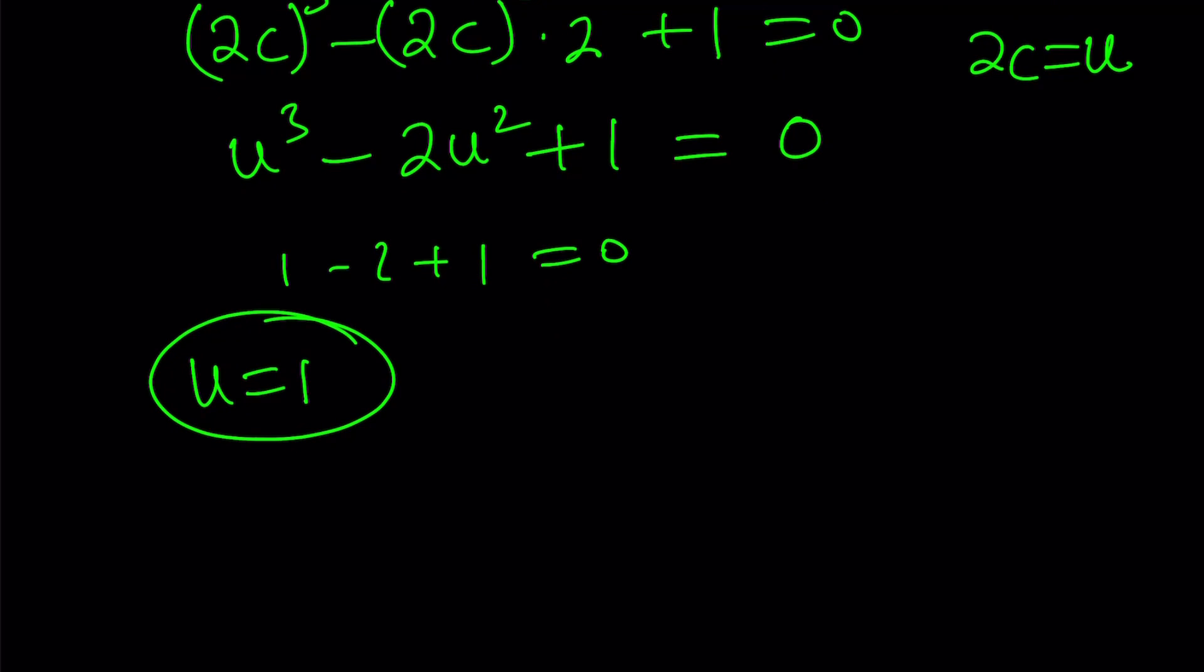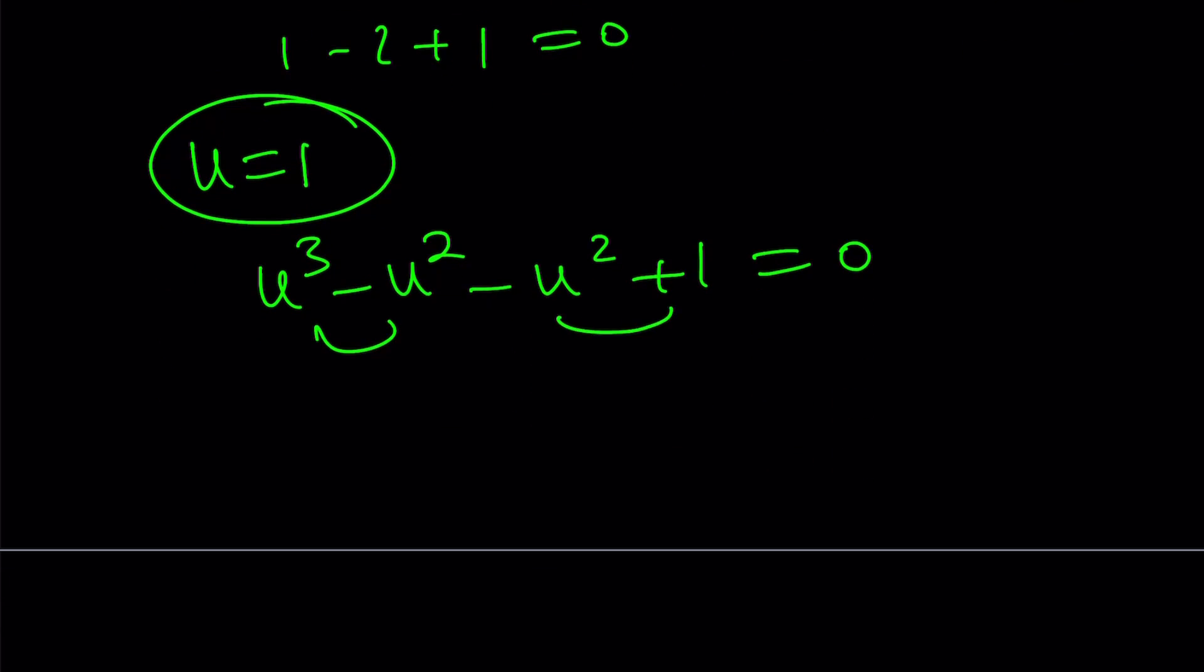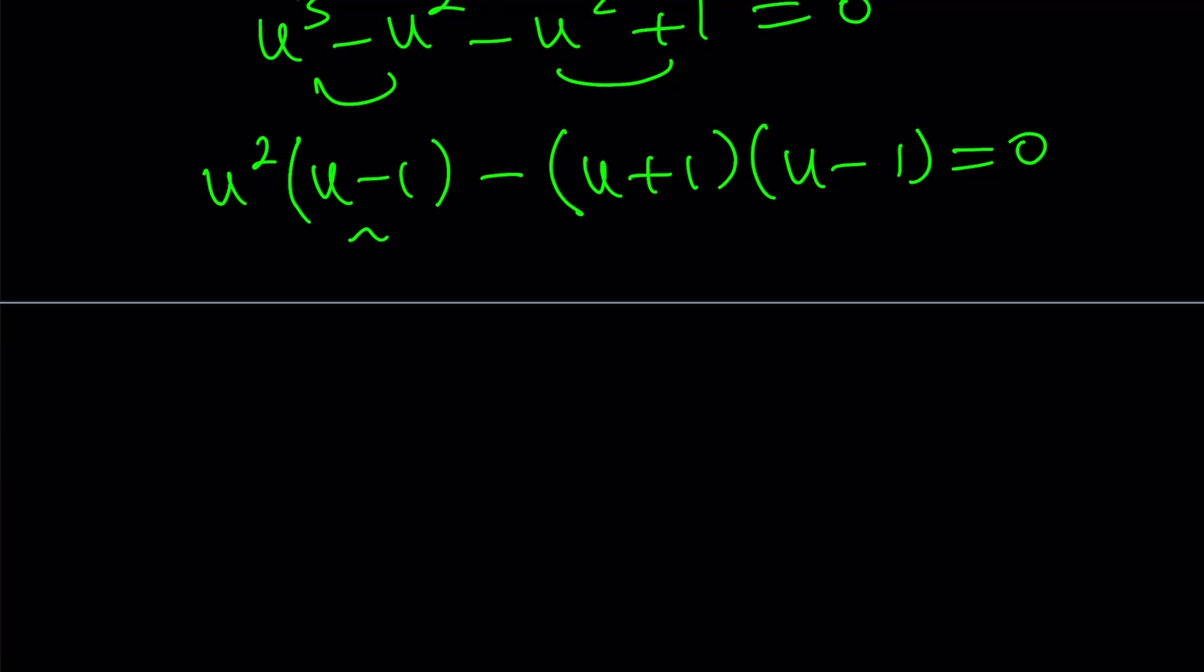That's something you should always check. Now, let's go ahead and arrange this polynomial and we can just factor it. u cubed minus u squared minus u squared plus 1. That wasn't too hard, right? Now, we can factor by grouping. We can take out u squared times u minus 1. Minus u squared minus 1 can be written as u plus 1 times u minus 1. I hope you don't mind skipping a step. Now, u minus 1 is a common factor. We can take it out and we get u minus 1 multiplied by u squared minus u minus 1. And the whole thing is equal to 0.